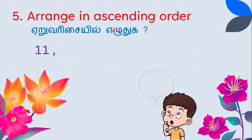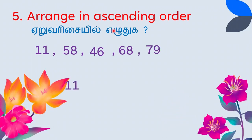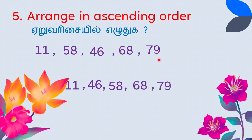Next, ascending order: 11, 58, 46, 68, and 79. The smallest number is 11 first. Then look at the tens digit — the small tens digit is 4, that is 46; next is 5, that is 58; next is 68; and then 79. Ascending order: 11, 46, 58, 68, 79.